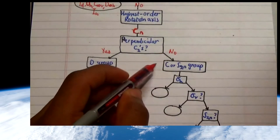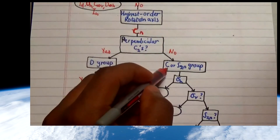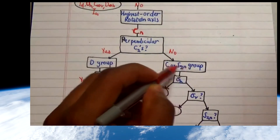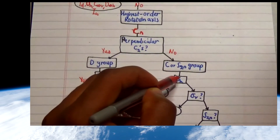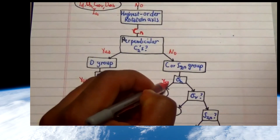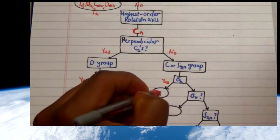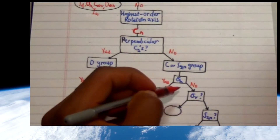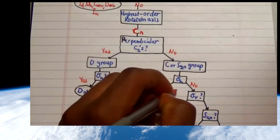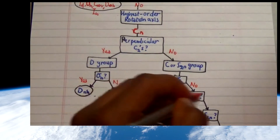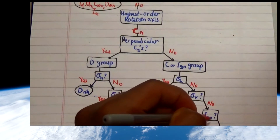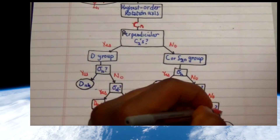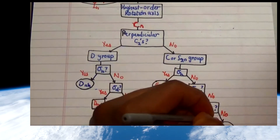On the other branch where there is no C2' axis perpendicular to the principal axis, we differentiate C and S2n groups using planes. If you have a sigma-h, you are CNH. If you don't have sigma-h but have a sigma-v (a vertical plane going through bonds), you are CNV. If you have neither, then check for S2n: if yes, you are S2n; if not, you are simply CN.